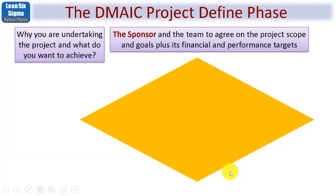Here in the DMAIC project Define Phase, what the Define Phase is all about is to understand why the organization is undertaking this project and what exactly you want to achieve. A key player is called the sponsor, and it's the sponsor and the team who will want to agree on the project scope and goals, plus its financial and performance targets. Scope means what's included and what isn't — what's in and what's out.